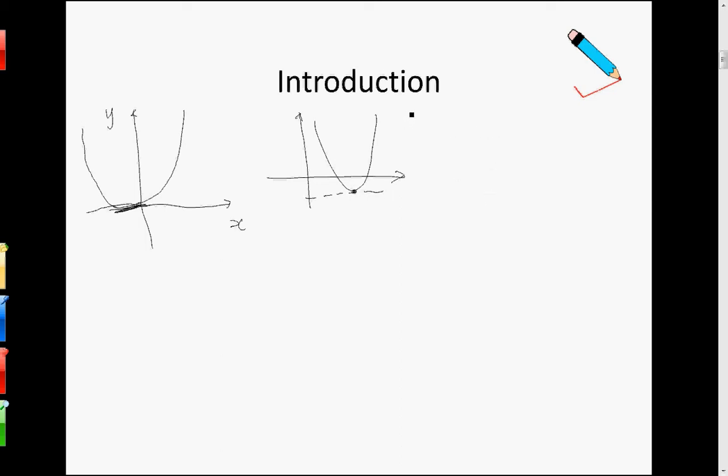This is ax square plus bx plus c, where a is more than 0. Similarly for a less than 0, we have a graph that looks like this, where we have a maximum point.